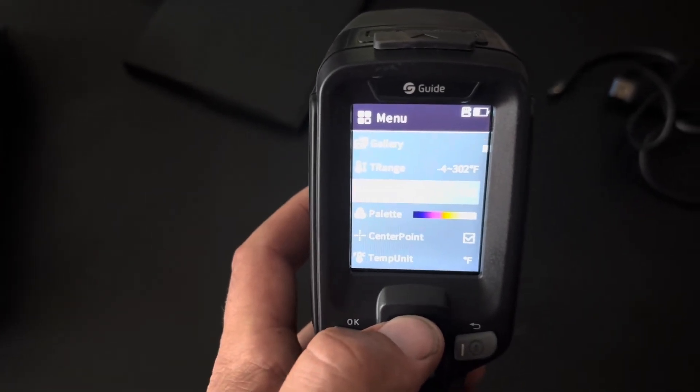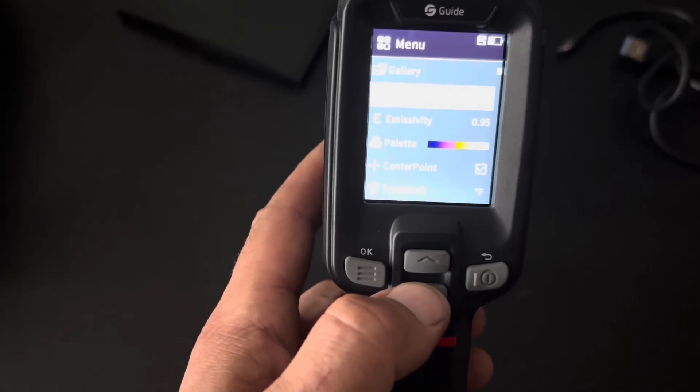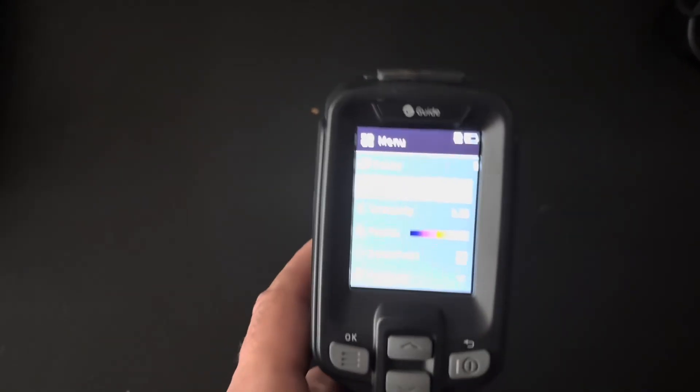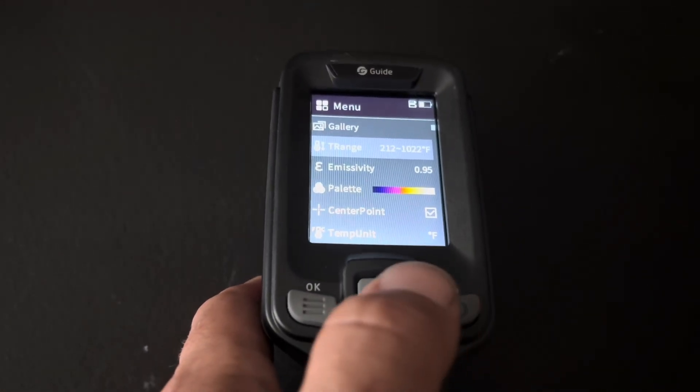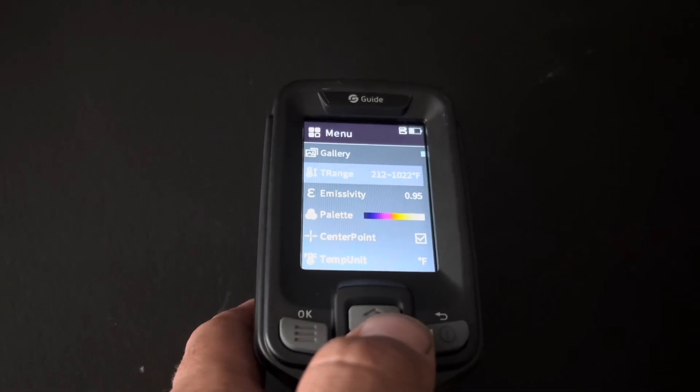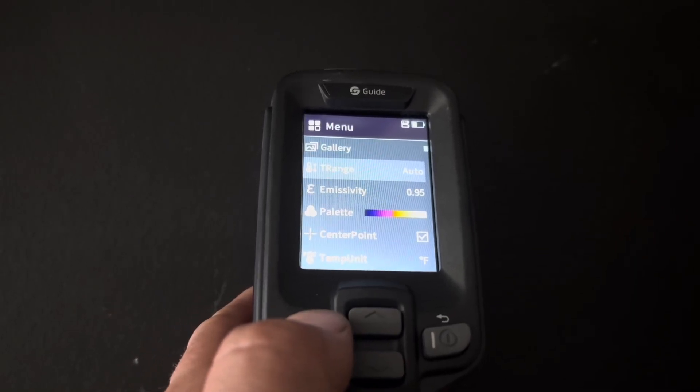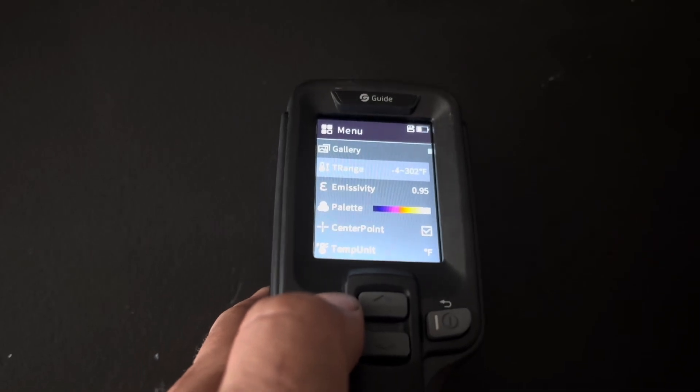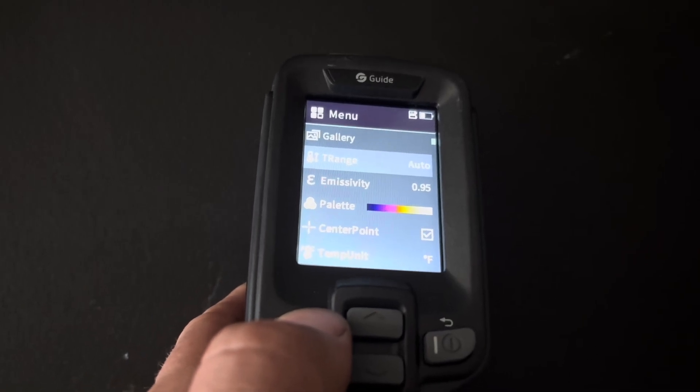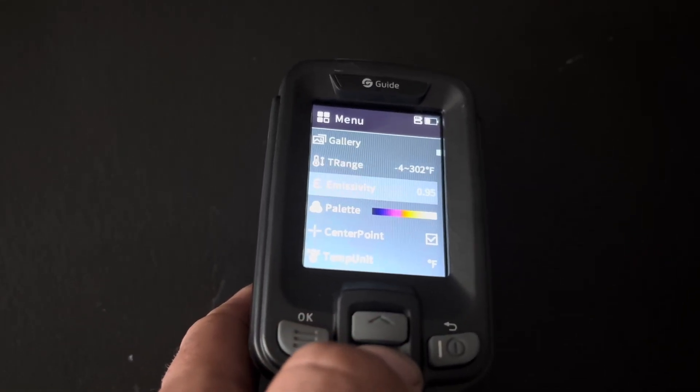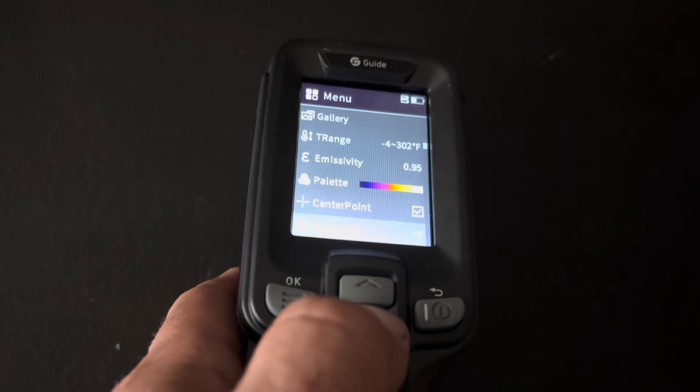Whenever you're taking readings, you want to make sure you have the right parameters set up. Right now I have it set up for negative four Fahrenheit to 322 Celsius. It has a couple different options: you can do 212 to 1022 Fahrenheit and auto mode, or negative four to 302 Fahrenheit - that's the one I'm probably going to leave it on. You could do auto too, but I would very seldom be testing anything over 212 degrees, maybe some heat exchangers, but that would be rare.